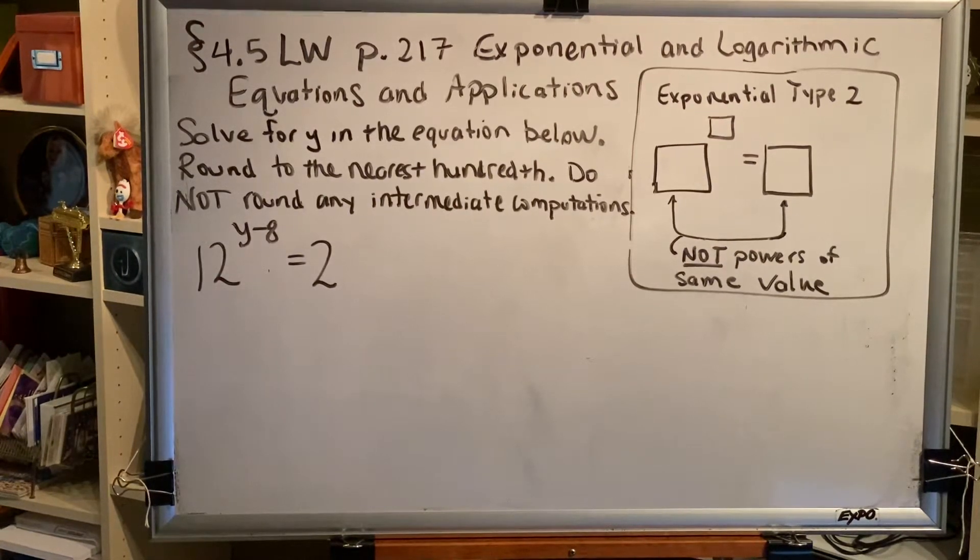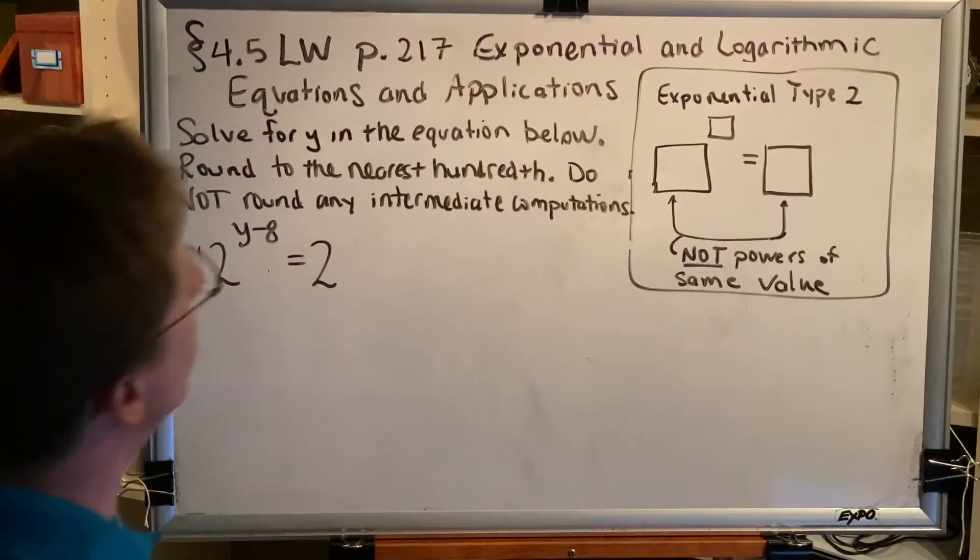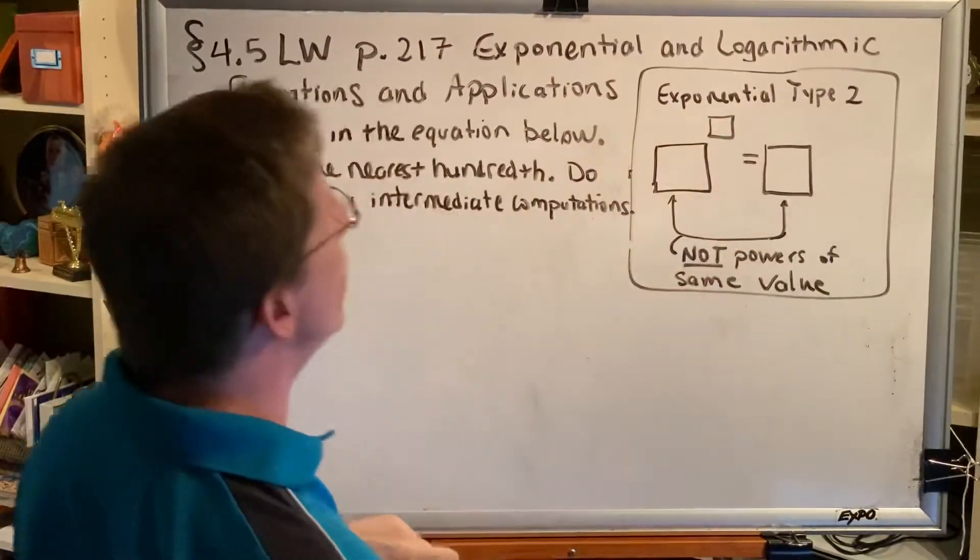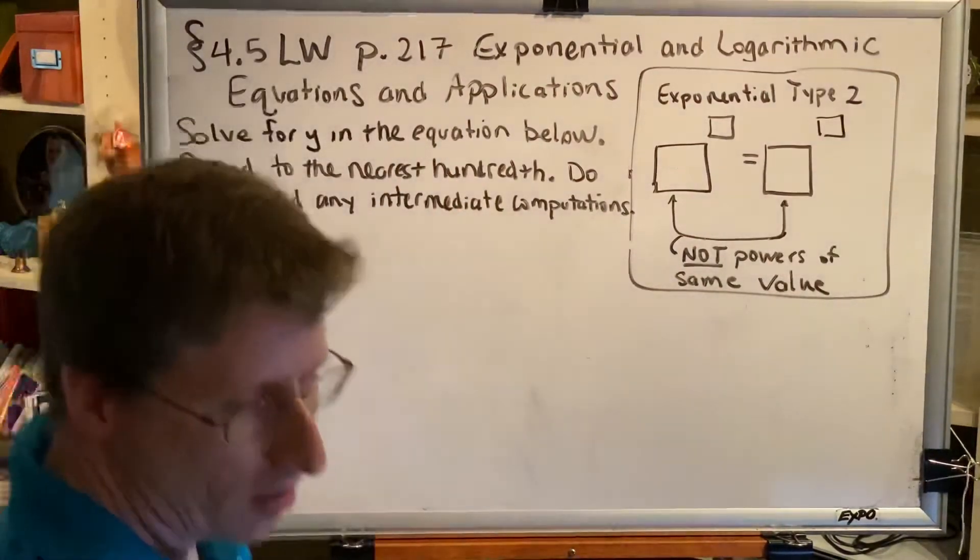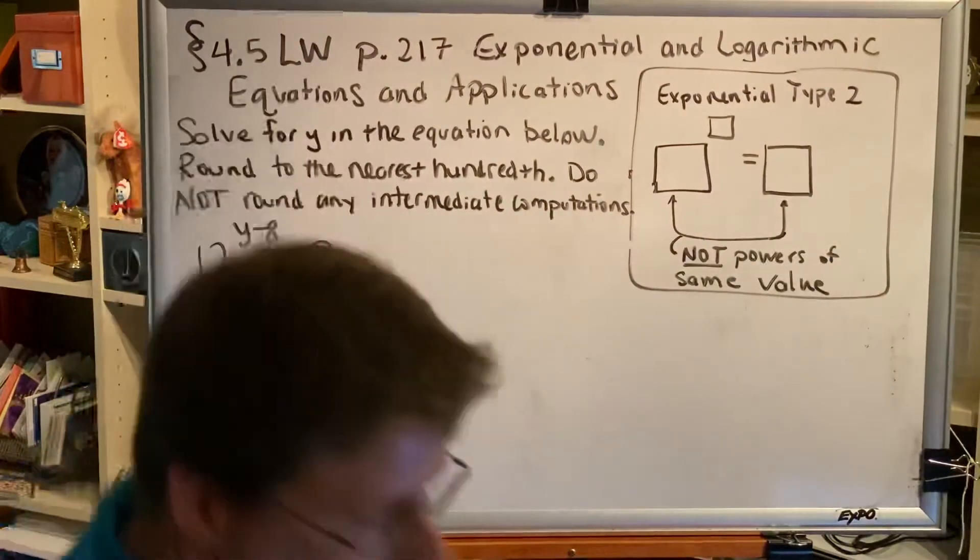Please open your learning workbook to page 217 and we're going to solve some Alex problems. They are all exponential type 2. As a brief reminder, exponential type 2 is of the form base raised to exponent equals base, and sometimes there is also a second exponent, but that is not required.